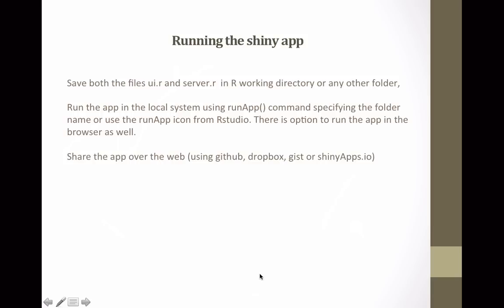Next, how to run the Shiny app. We discussed the two files — UI.R and server.R. We need to save both files in either the R working directory or any other folder; the key point is that both files must be stored together. To run the app on the local system, if you are in your working directory where both files are stored, just type runApp() in the console and it will run the app. If the files are not in the working directory, provide the folder path as an argument to runApp().